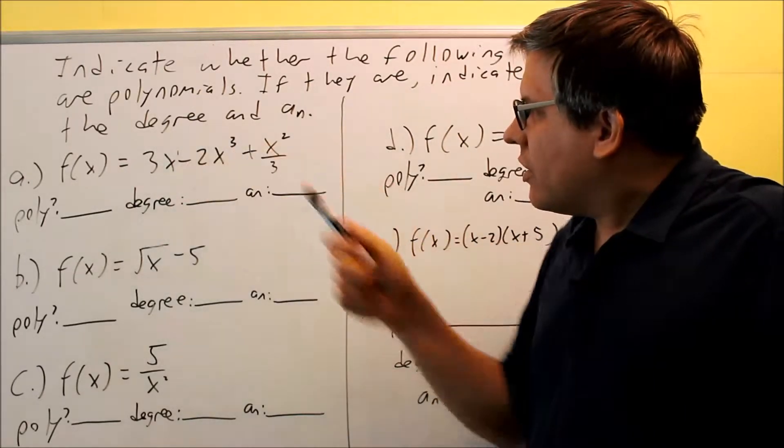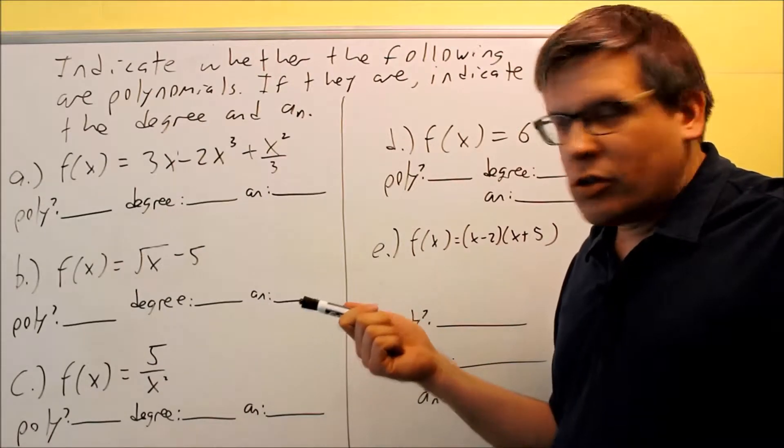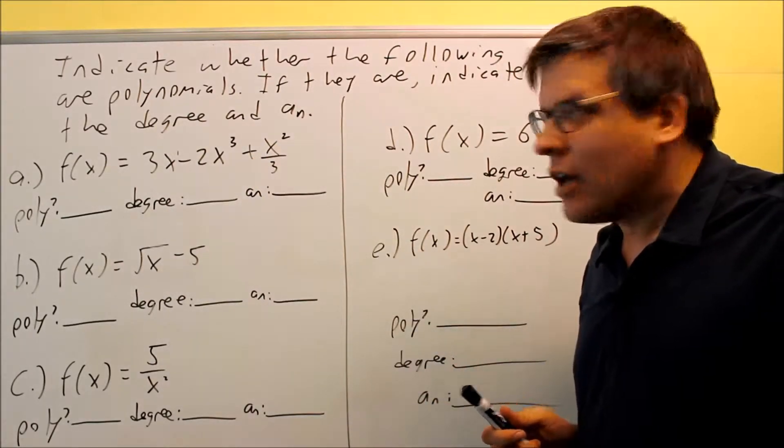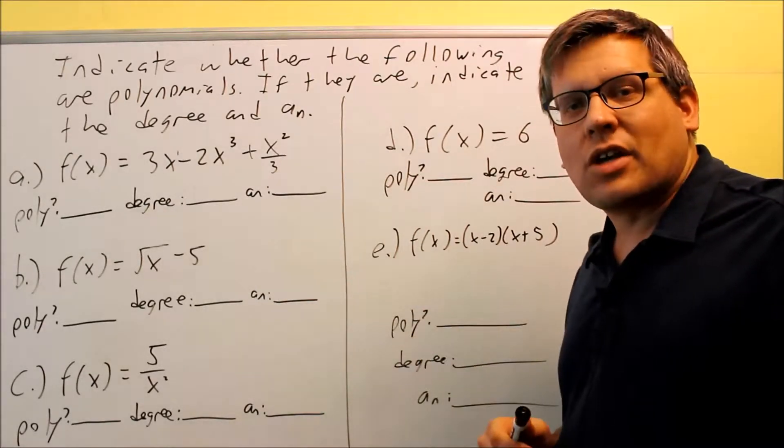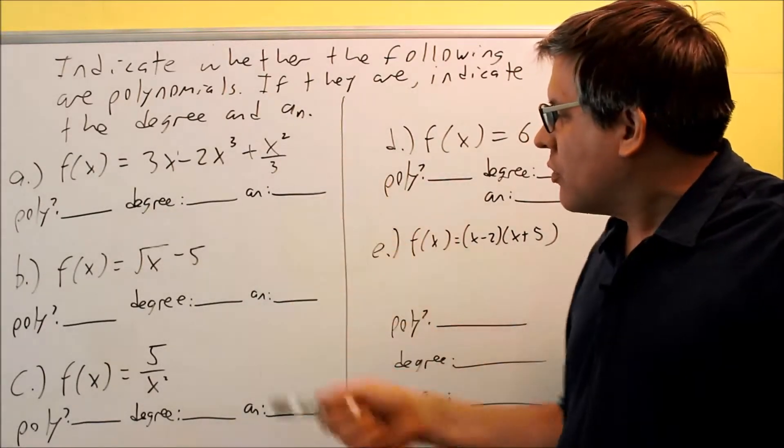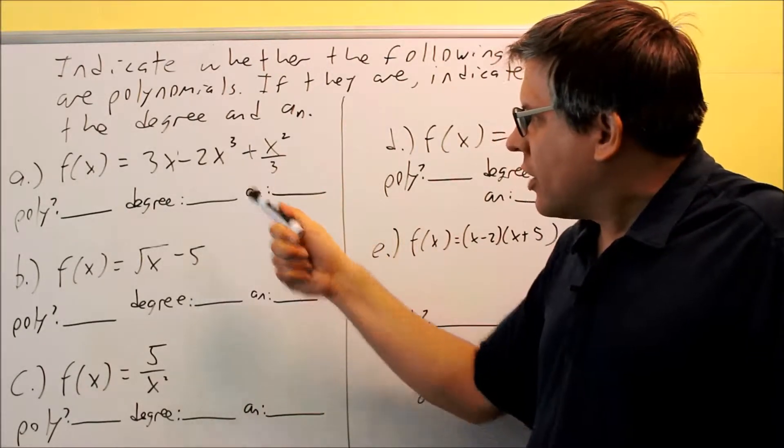Then, the degree, once we determine it is a polynomial, is going to be the highest power that you see on that. And the a_n is the number that comes in front of the x that has the highest power. So let's go through these examples and see if they're polynomials or not. Then we'll indicate degree and the a_n if it is a polynomial.